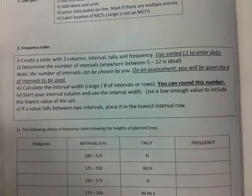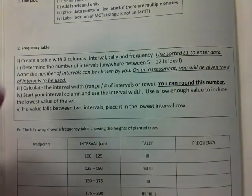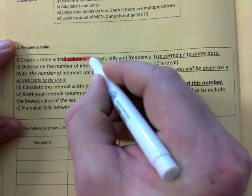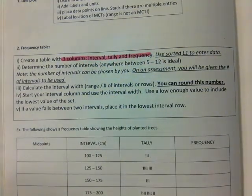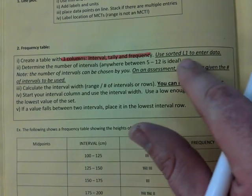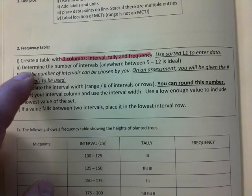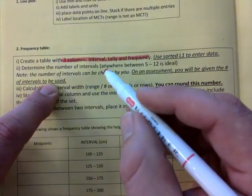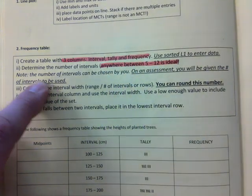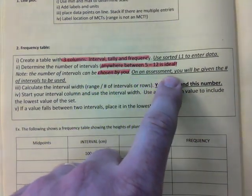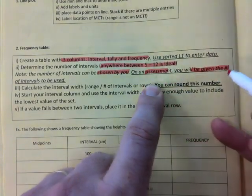Frequency table though, if you have a highlighter, there's a few things here. You create a table with three columns, right? Interval, tally and frequency. Use sorted L1 to enter data. And I will walk you through it. Determine the number of intervals. Anywhere between five and 10 is ideal. The number of intervals can be chosen by you. On an assessment, you'll be given the number of intervals.